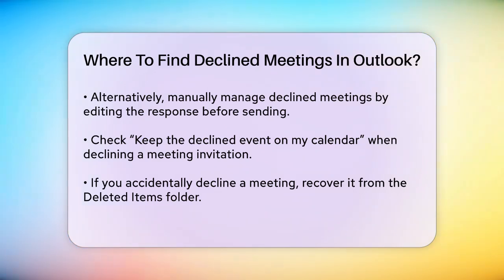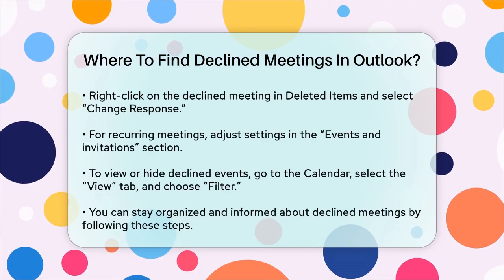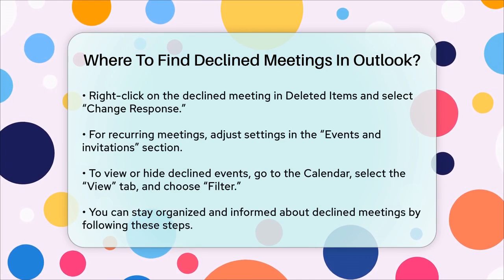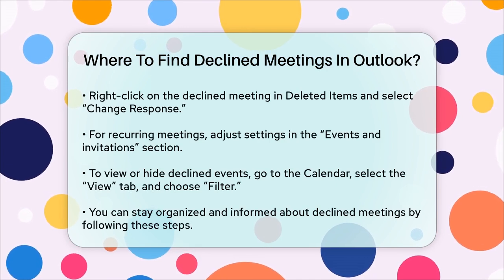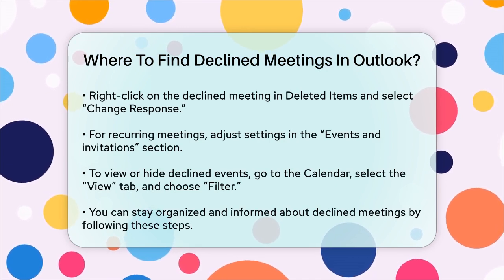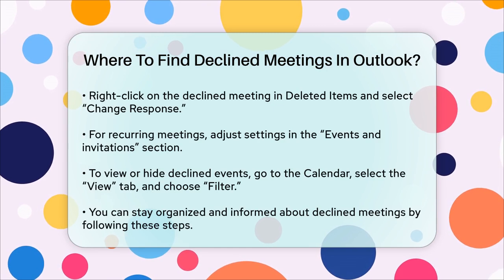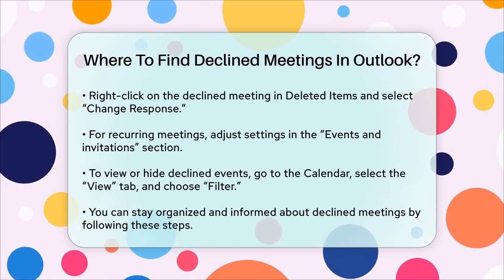For recurring meetings, you can also keep declined events visible by adjusting the settings in the Events and Invitations section of the calendar options. This ensures that even if you decline a recurring meeting, it will still show up on your calendar.